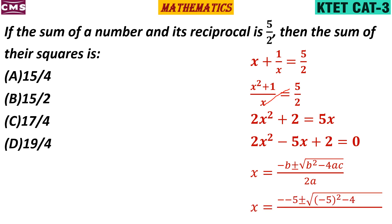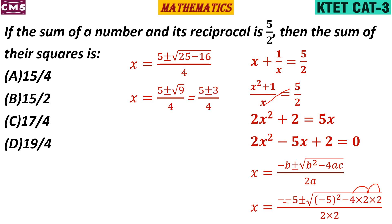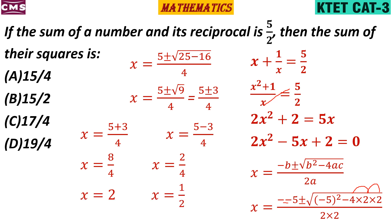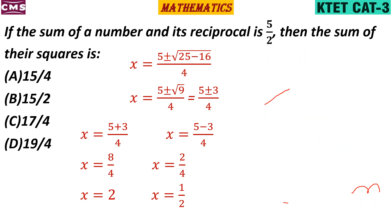Substituting values: b = -5, a = 2, c = 2. So x = (5 ± √(25 - 16)) / 4 = (5 ± √9) / 4 = (5 ± 3) / 4. This gives x = 8/4 = 2 or x = 2/4 = 1/2.